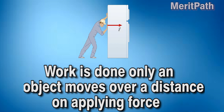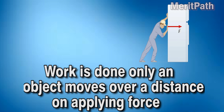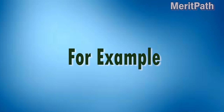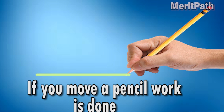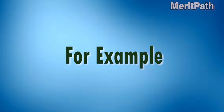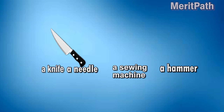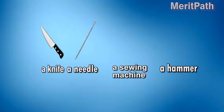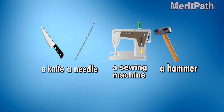Work is done only when an object moves over a distance due to force. For example, if you move a pencil, work is done. There are many tools which we use in daily life to ease our work, for example a knife, a needle, a sewing machine, a hammer, etc.